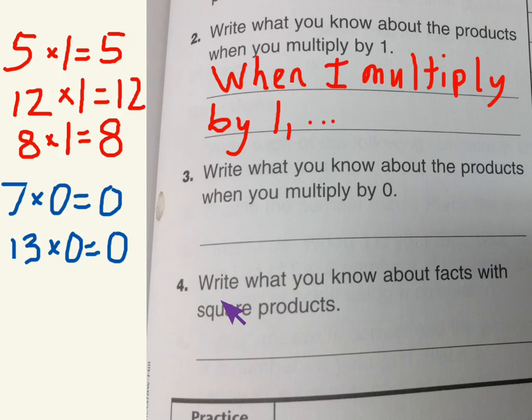And then the last one: write what you know about facts with square products. This is yesterday's lesson, so you may need to review that. Can you explain facts with square products and what that is?